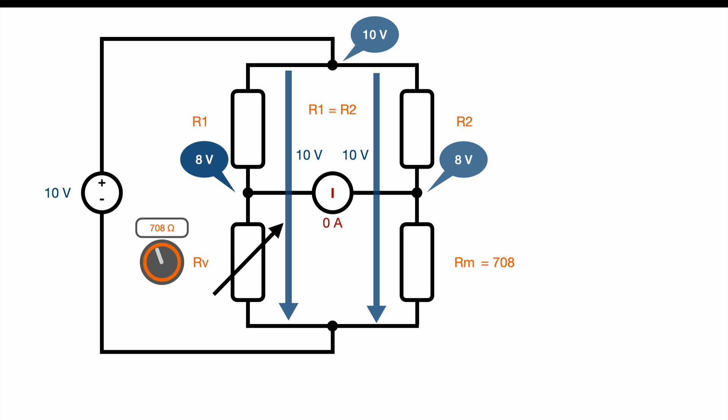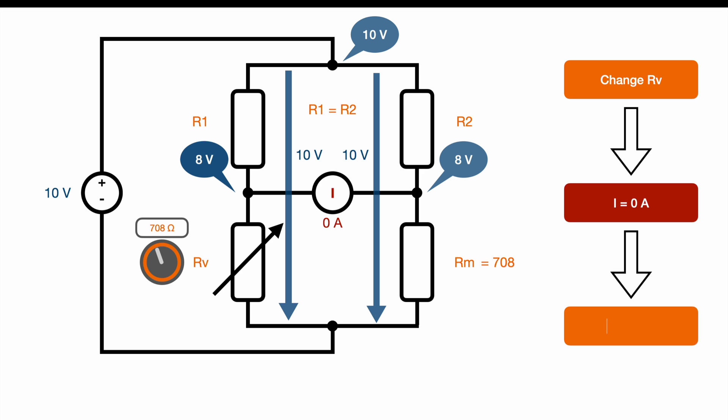Let's sum up the pattern. First of all, we're going to change RV as long as we reach 0 amps in the amp meter, and from there we know that RM is the same as RV.